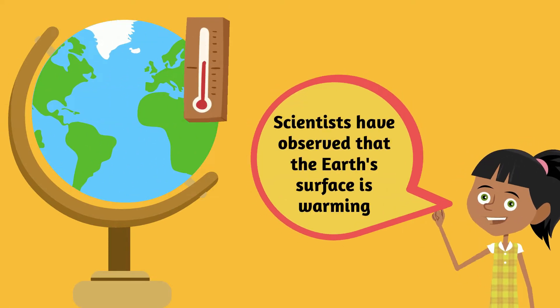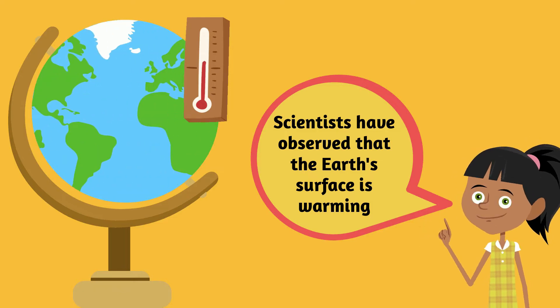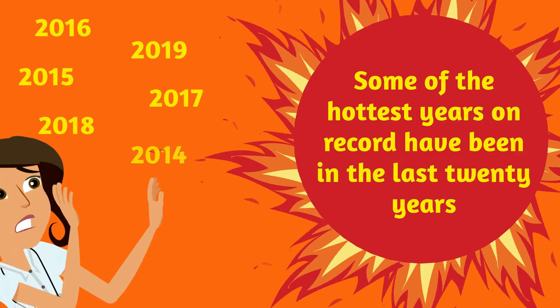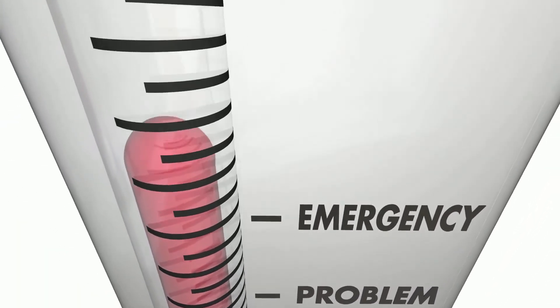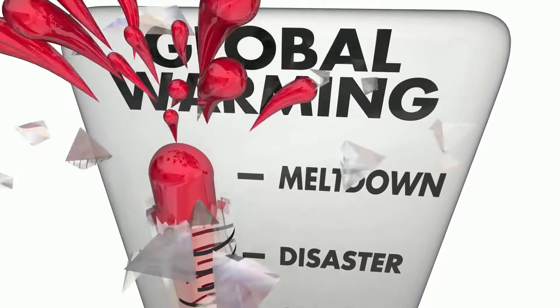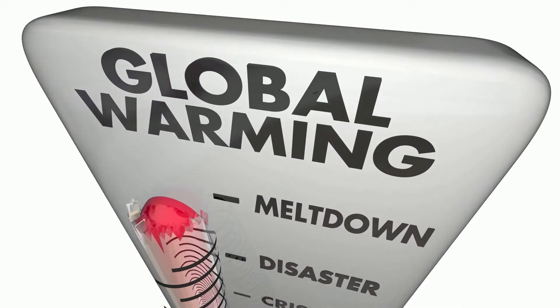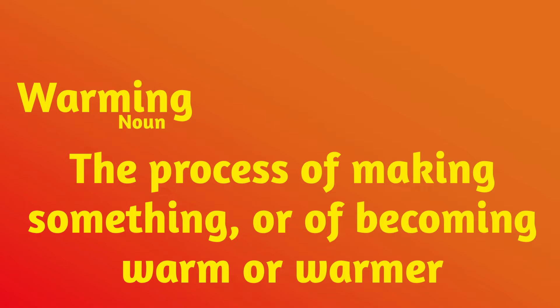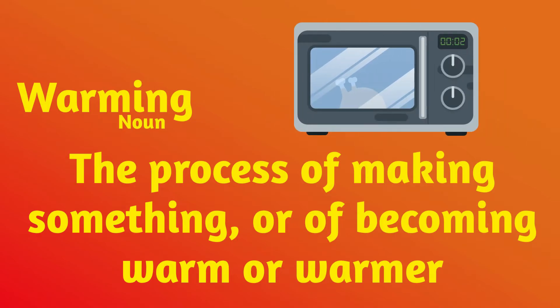Scientists have observed that the earth's surface is warming. Some of the hottest years on record have been in the last 20 years. What can we call this? Is it a problem, an emergency, a crisis, a disaster, a meltdown? The term we use is global warming. Global is an adjective meaning something relating to the whole world — something that is worldwide. The word warming is a noun meaning the process of making something or becoming warm or warmer.